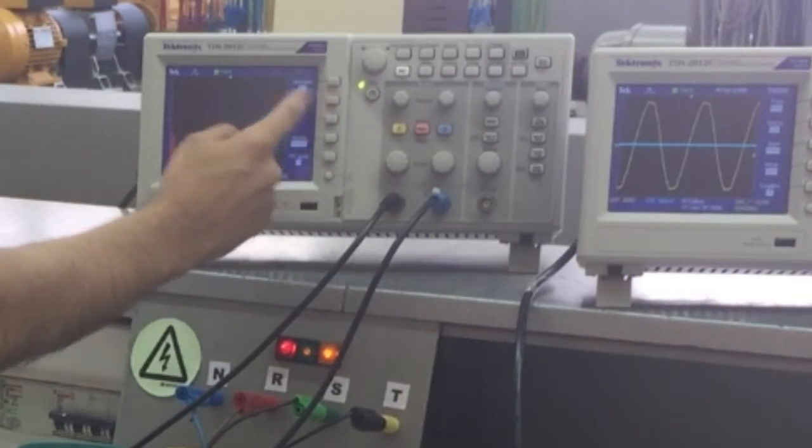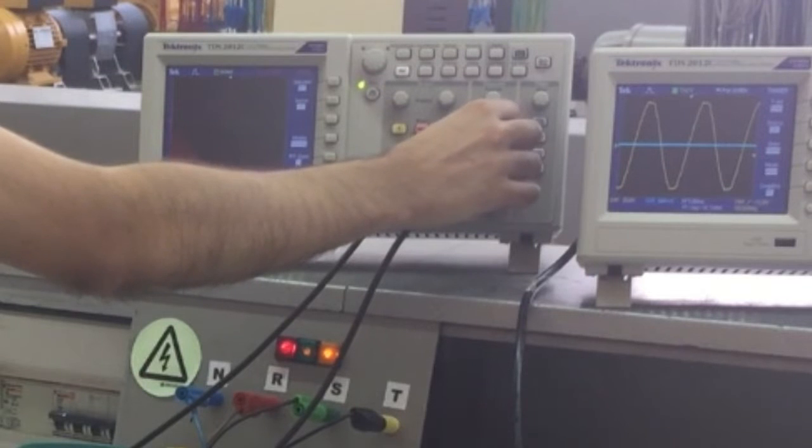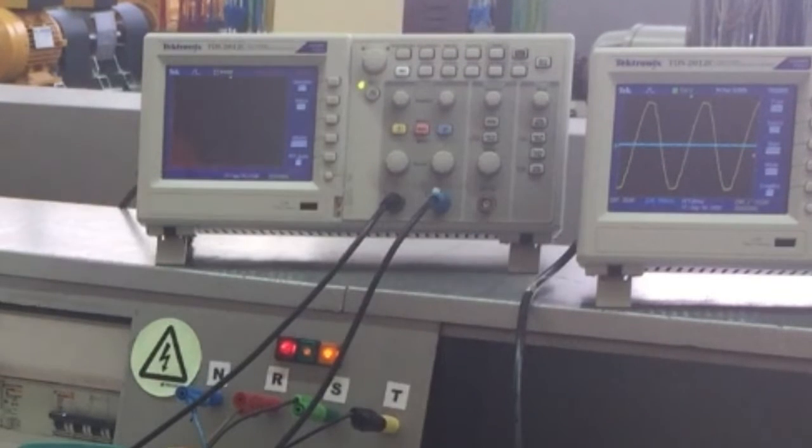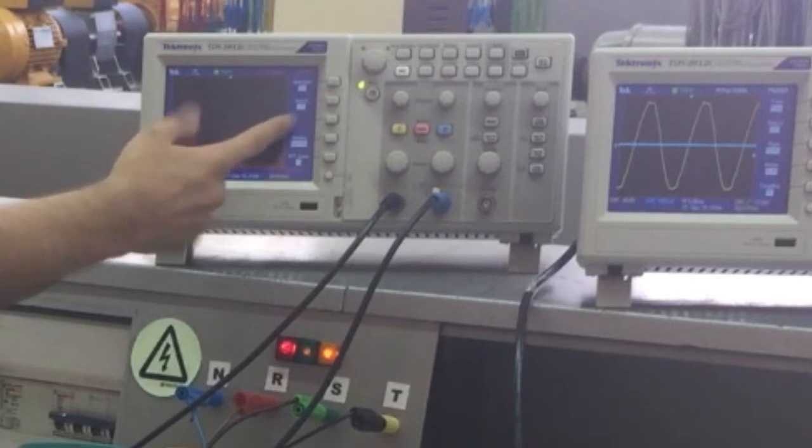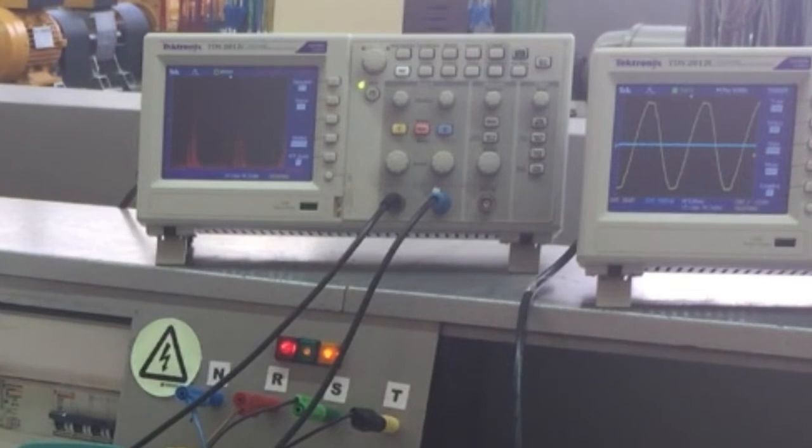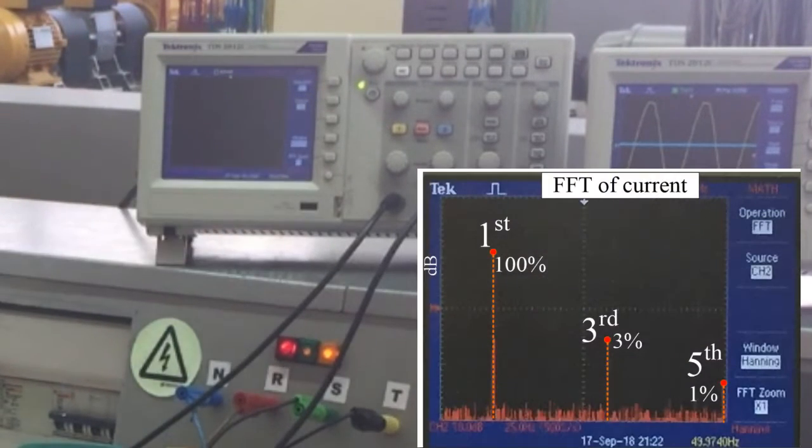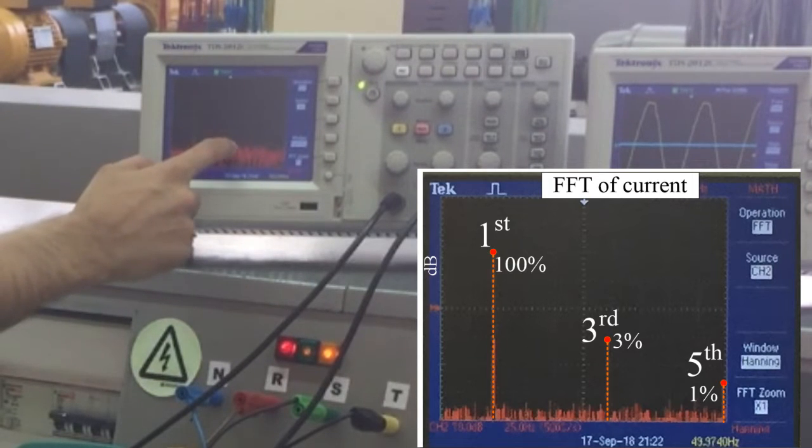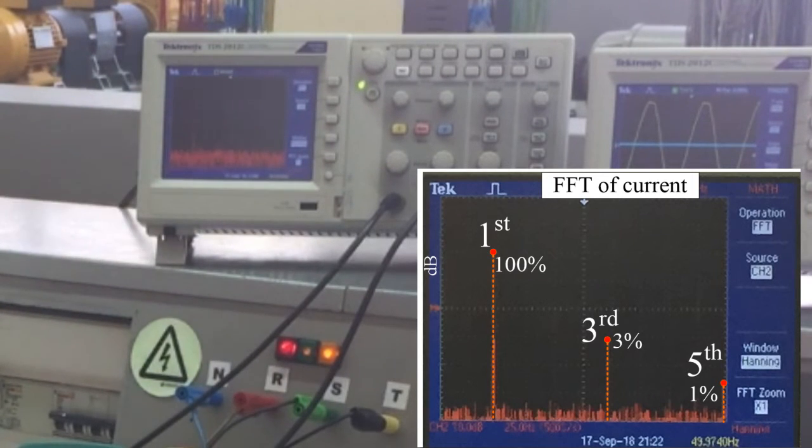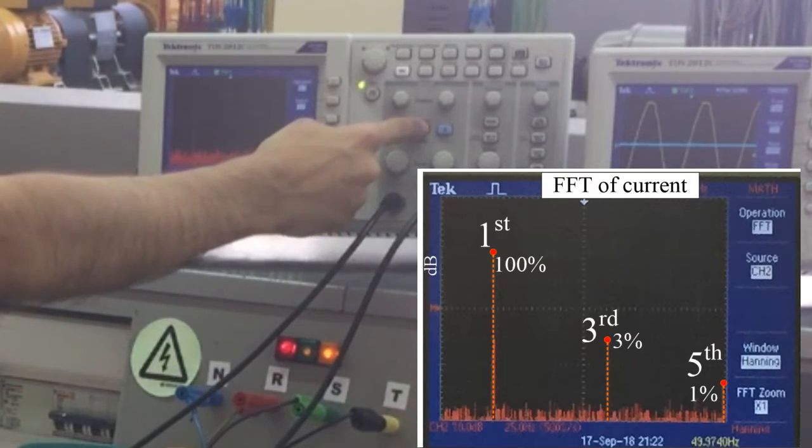Next, go to the fast Fourier transformation tool and look for the harmonics of the voltage and of the current. It may take some time to do the calculations. Notice the first, the third and the fifth harmonics of the current. You will see that the third harmonic and the fifth one are very low compared to the first one, which means that you are still in the linear zone.